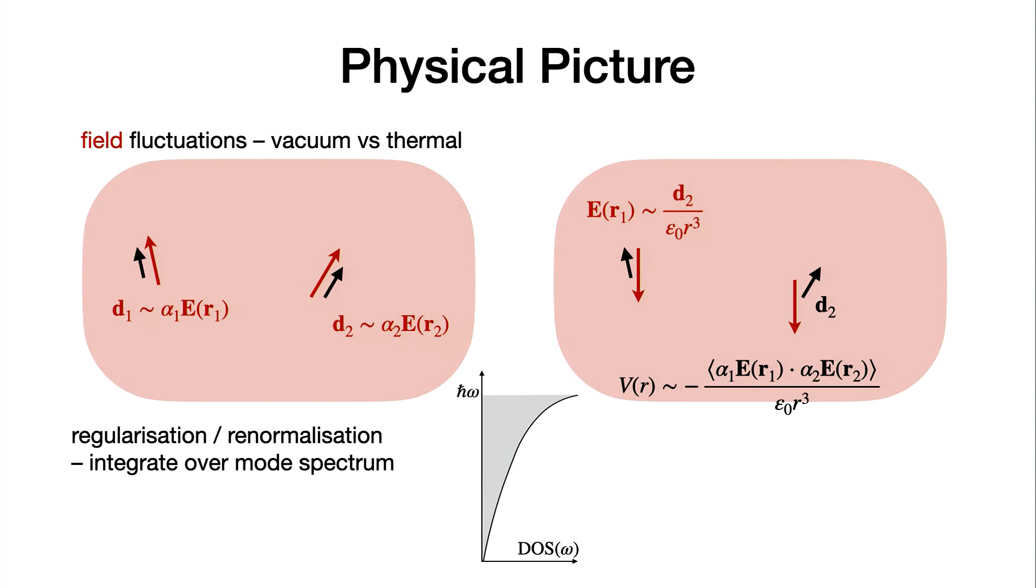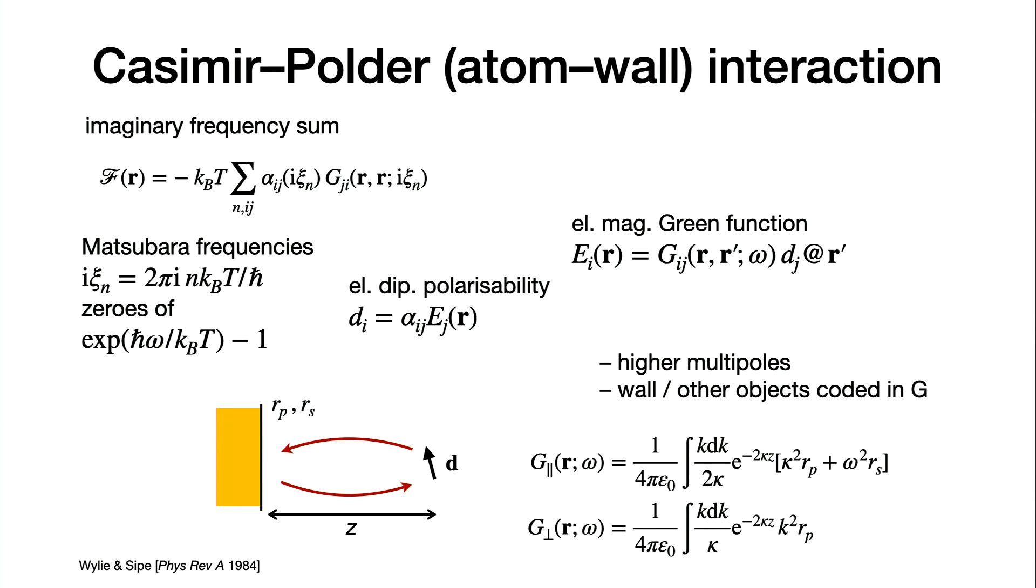Now you have dipoles that are induced by this field and they are also correlated. You can play the trick here that these fields generate fields and work out the interaction in this picture. You see the correct scaling, polarizability alpha 1, 2, and the correlation function of the field. That correlation function gives you an additional distance dependence. The factor 1 over r^6 in the non-retarded regime comes about by working out this field correlation function. You have to integrate over the mode spectrum of all the frequencies of the field.